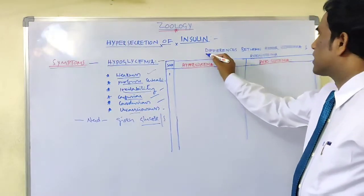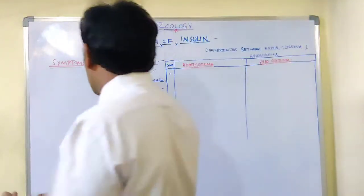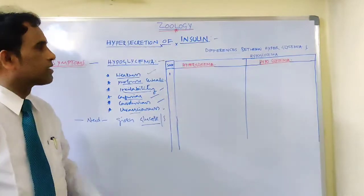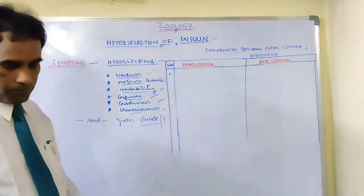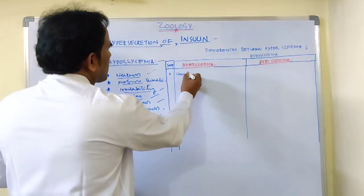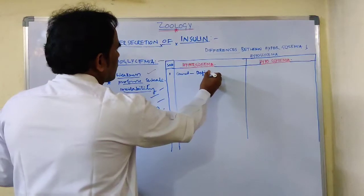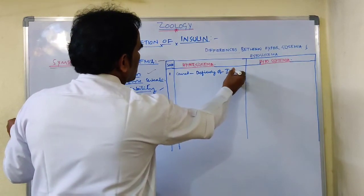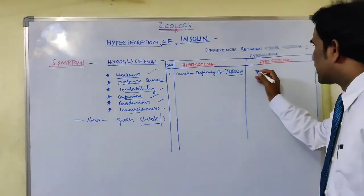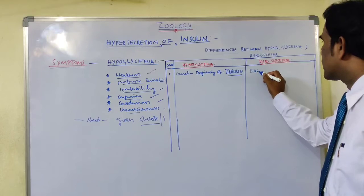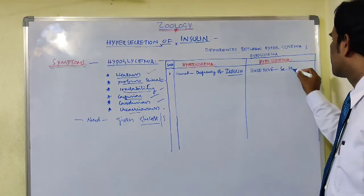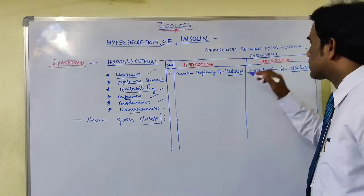Now let's see the differences between hyperglycemia and hypoglycemia. Hyperglycemia is caused due to deficiency of insulin, whereas hypoglycemia is caused by excessive secretion of insulin. In hyperglycemia, glucose levels in the blood increase, whereas in hypoglycemia, glucose levels in the blood decrease.